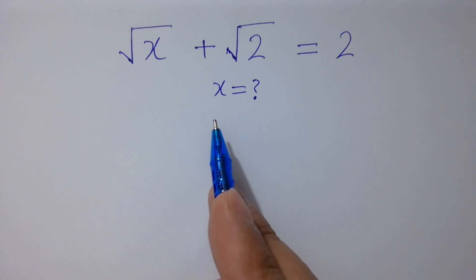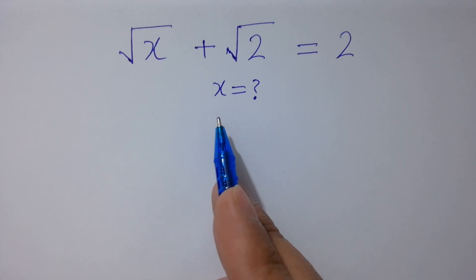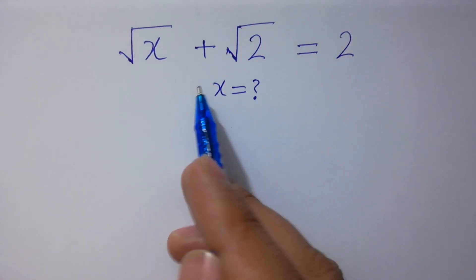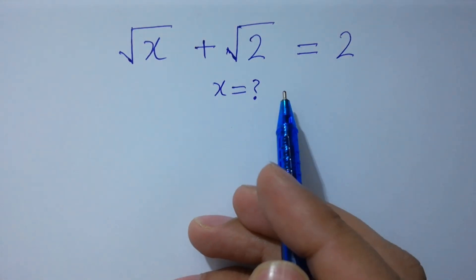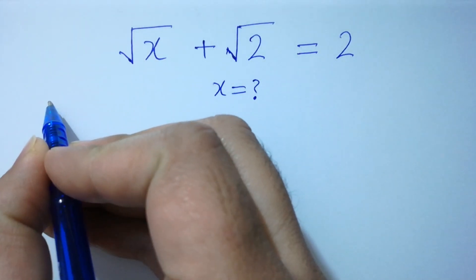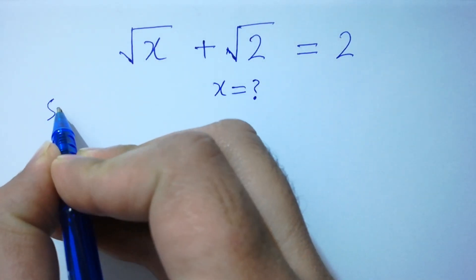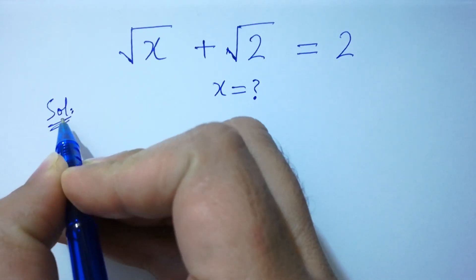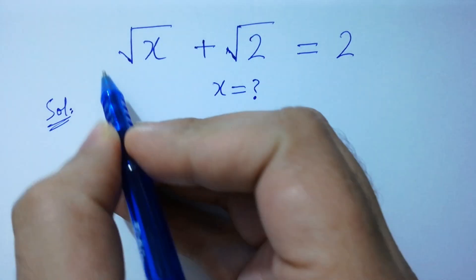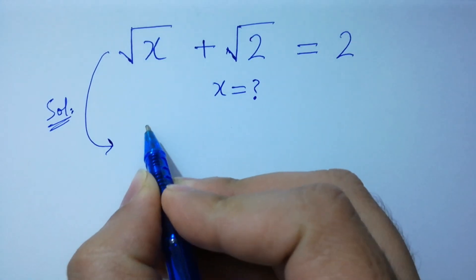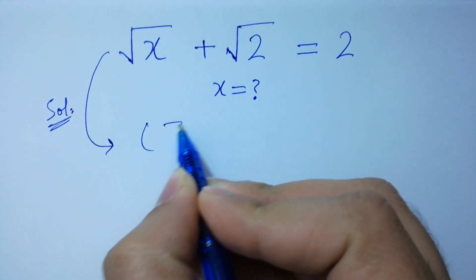Hello friends. Find the value of x if square root of x plus square root of 2 equals 2. Let's have a solution. To solve this, take square on both sides.